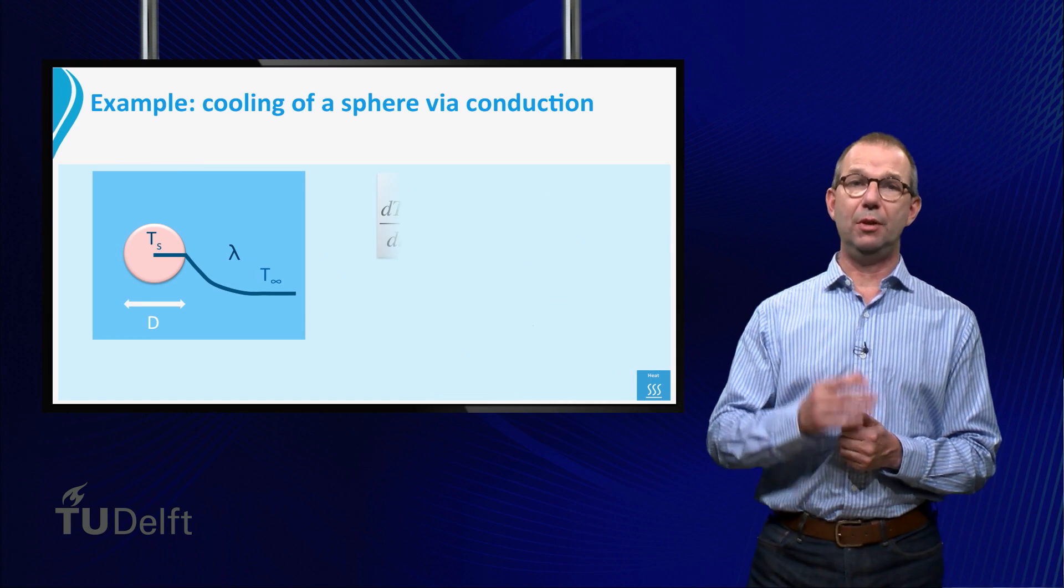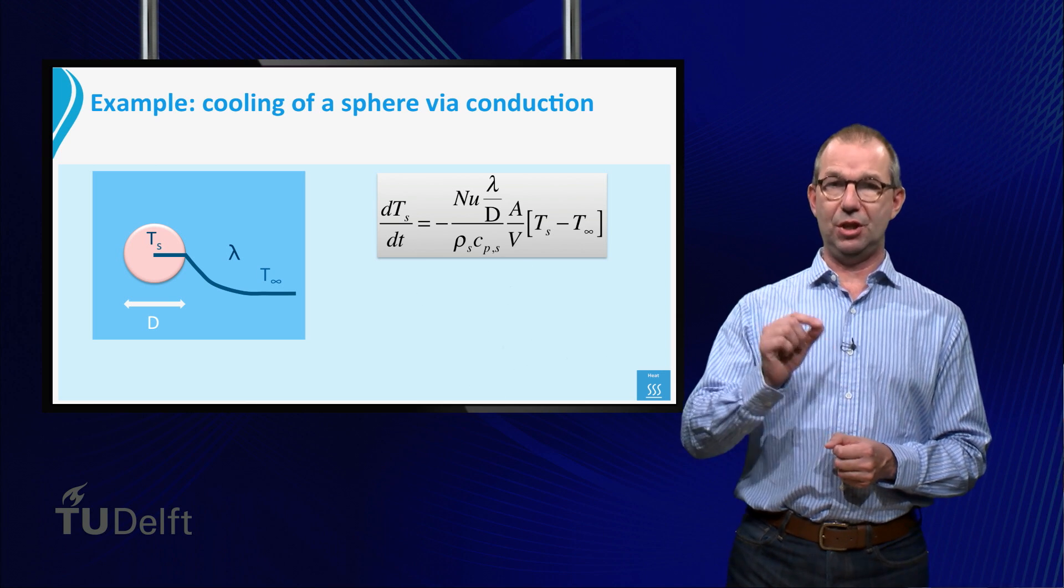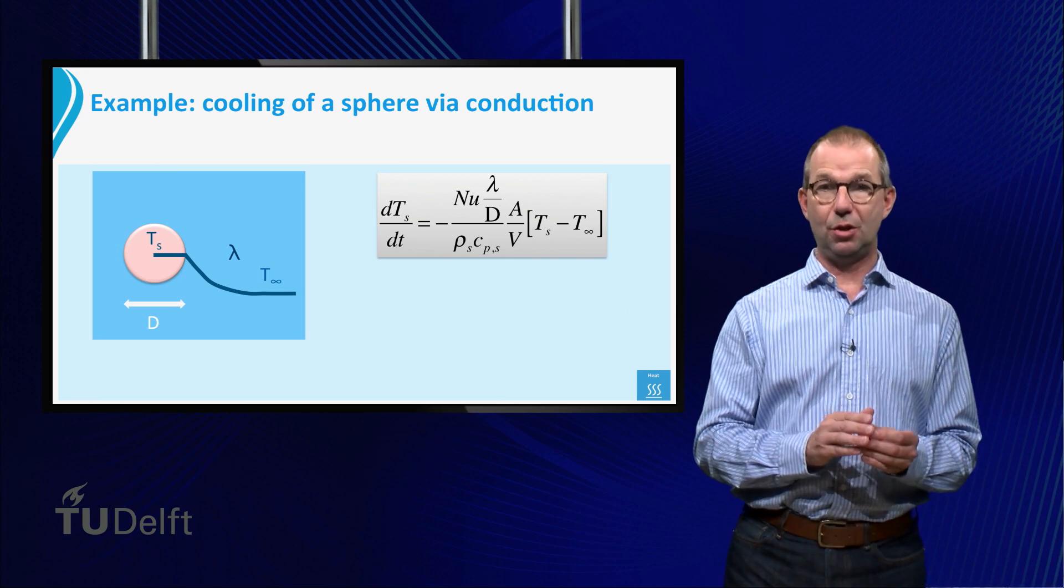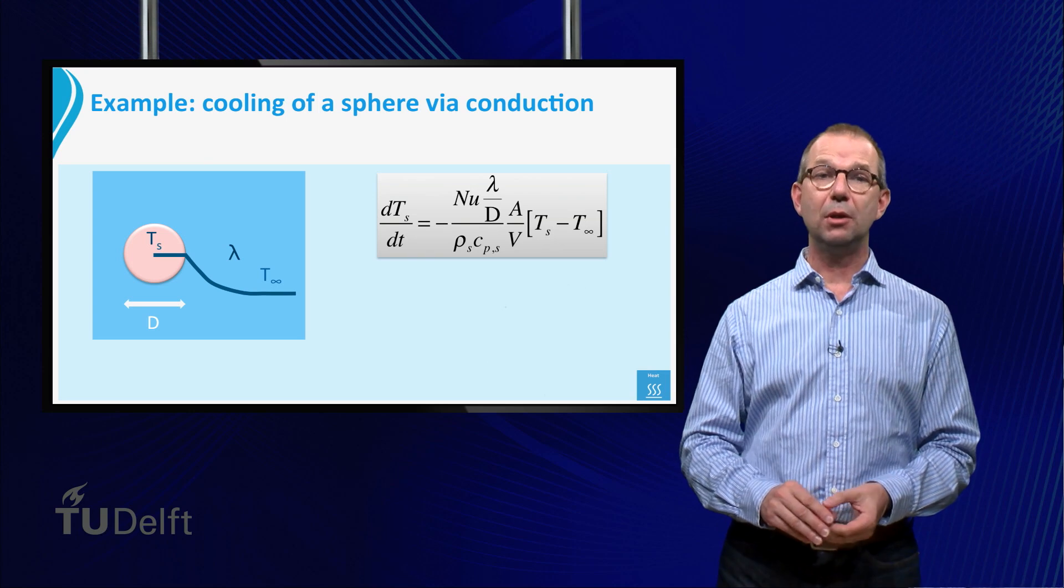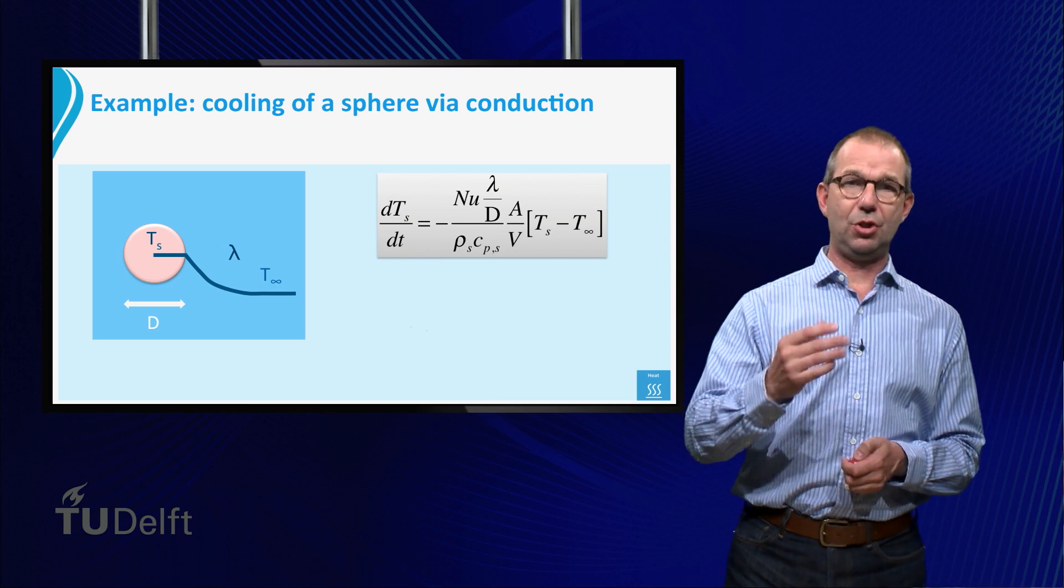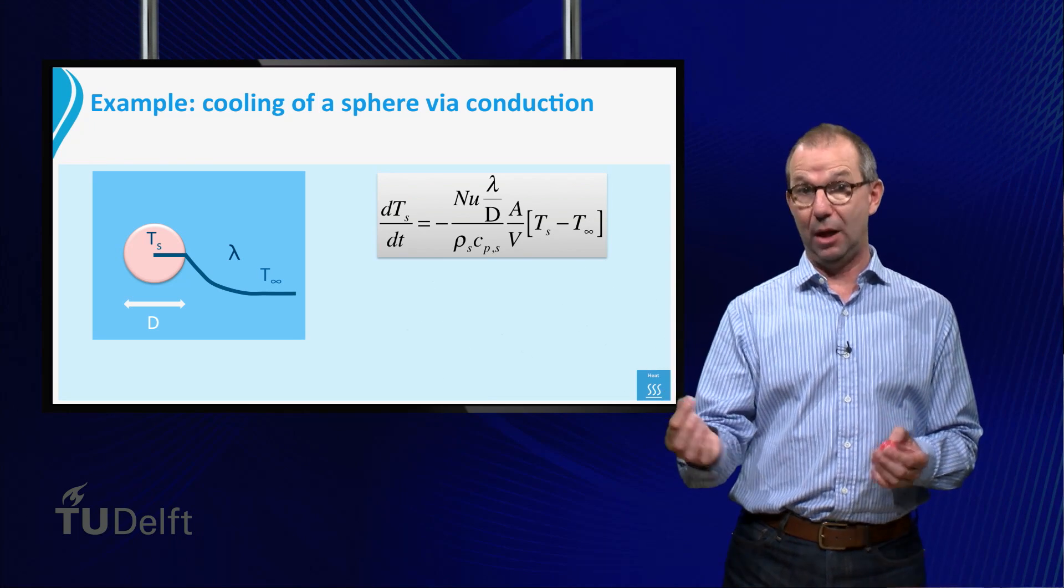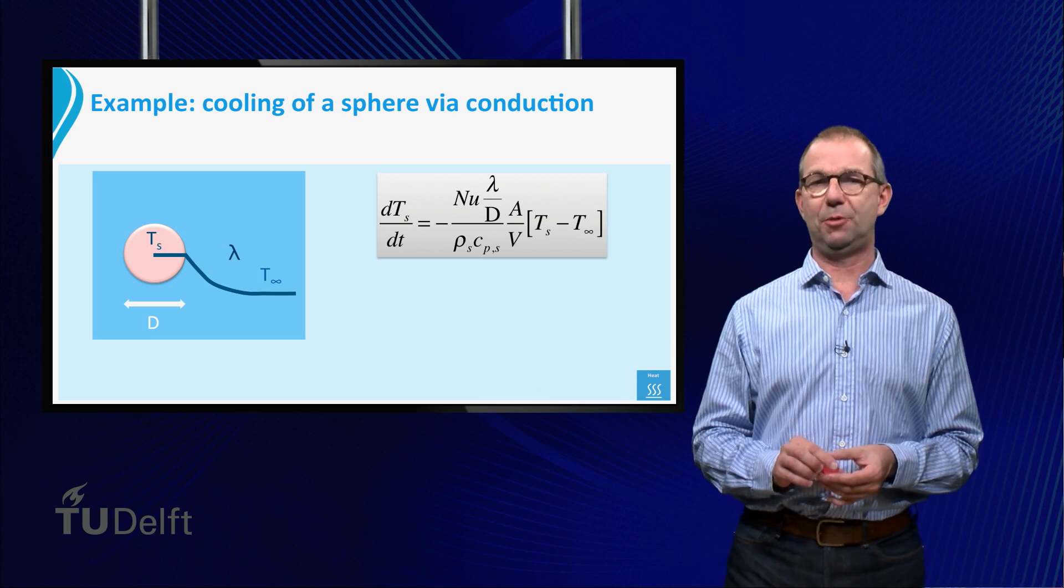So we write down the heat balance. Note that the driving force is the temperature of the sphere minus the temperature of the surroundings far away from the sphere. As the sphere cools down, the driving force will become smaller and smaller. Thus, the heat flow out of the sphere gets smaller and smaller as well, and the cooling slows down, exactly as we know from experience.